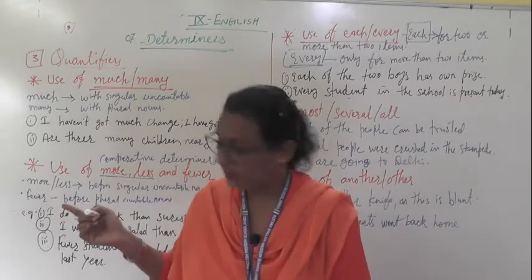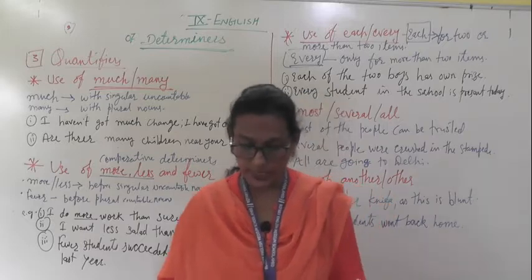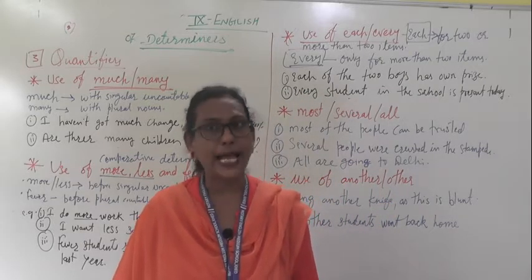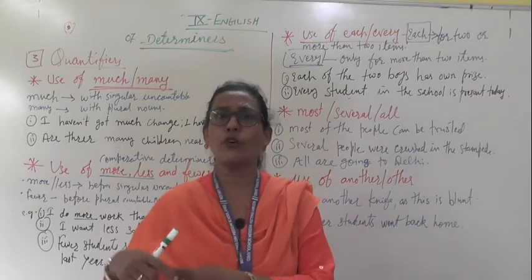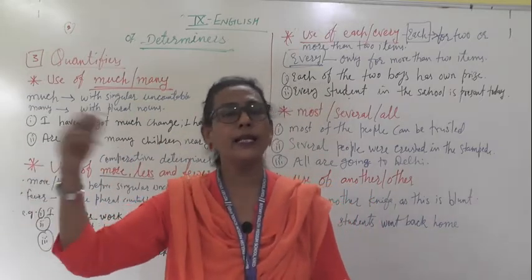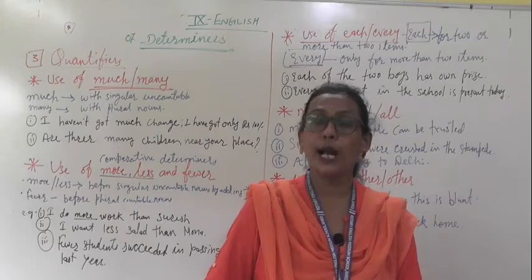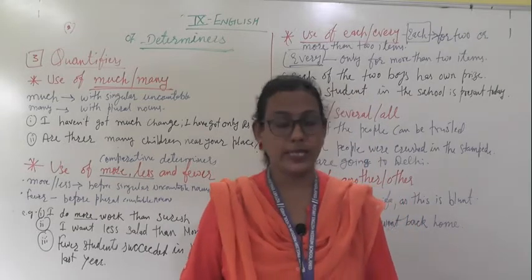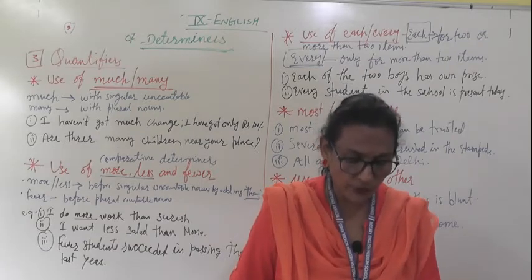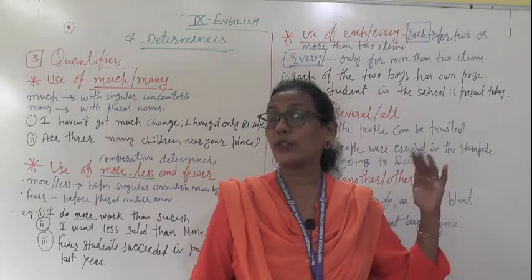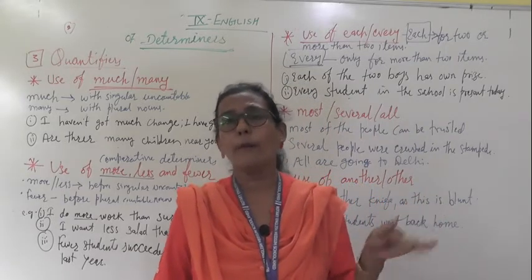We use more or less before singular uncountable nouns by adding 'than' after, indicating an additional or lesser quantity of something — for example, 'I do more work than Suresh.' We use fewer before plural countable nouns to refer to a group smaller than another — for example, 'We have fewer computers than a year ago,' showing comparison with last year.